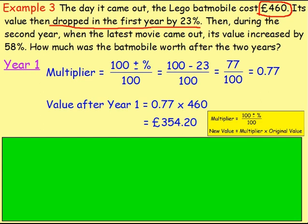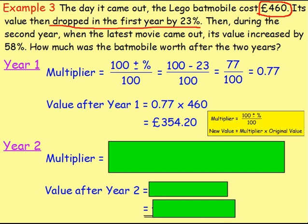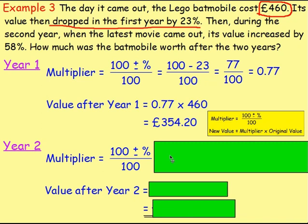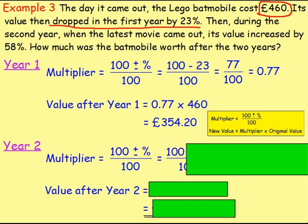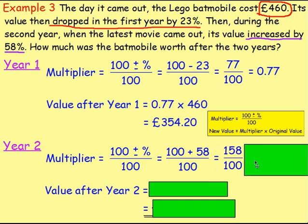So that's the price at the end of the first year. But what's happening after that is the movie's coming out, and the value is then increasing by 58%. So you then have to work out the value at the end of year 2. Once again, because a value is increasing by a percentage, let's use a multiplier. Start at 100, add or subtract your percentage, then divide by 100. In year 2 the value is increasing by 58%, so because it's increasing you add your percentage. It's 100 add 58, then divide by 100. You get 158 divided by 100, which is 1.58.